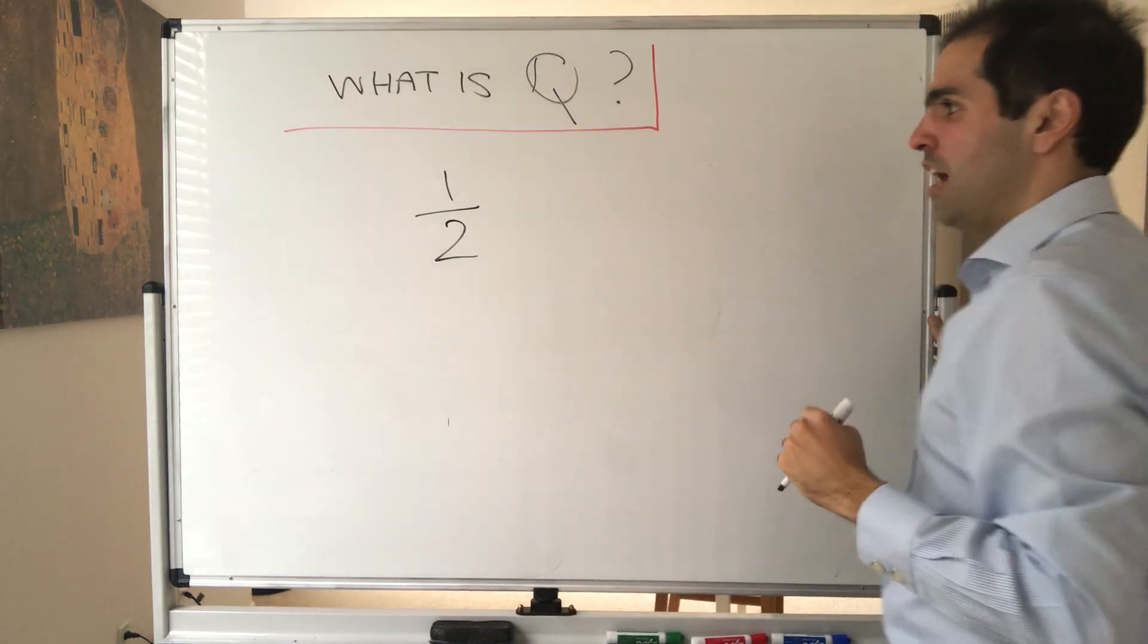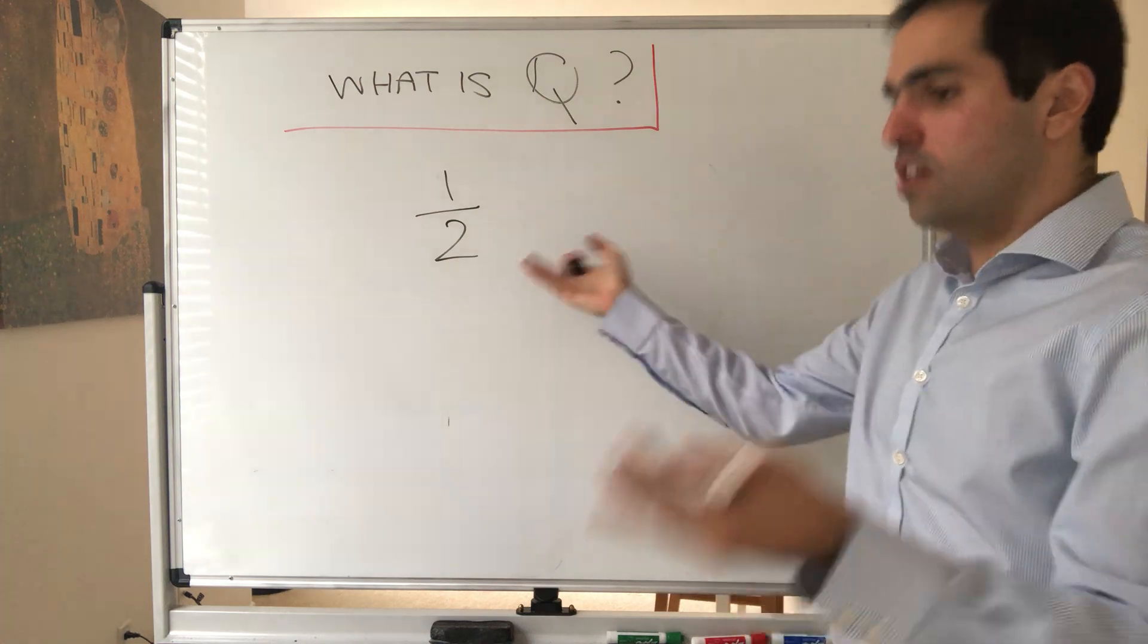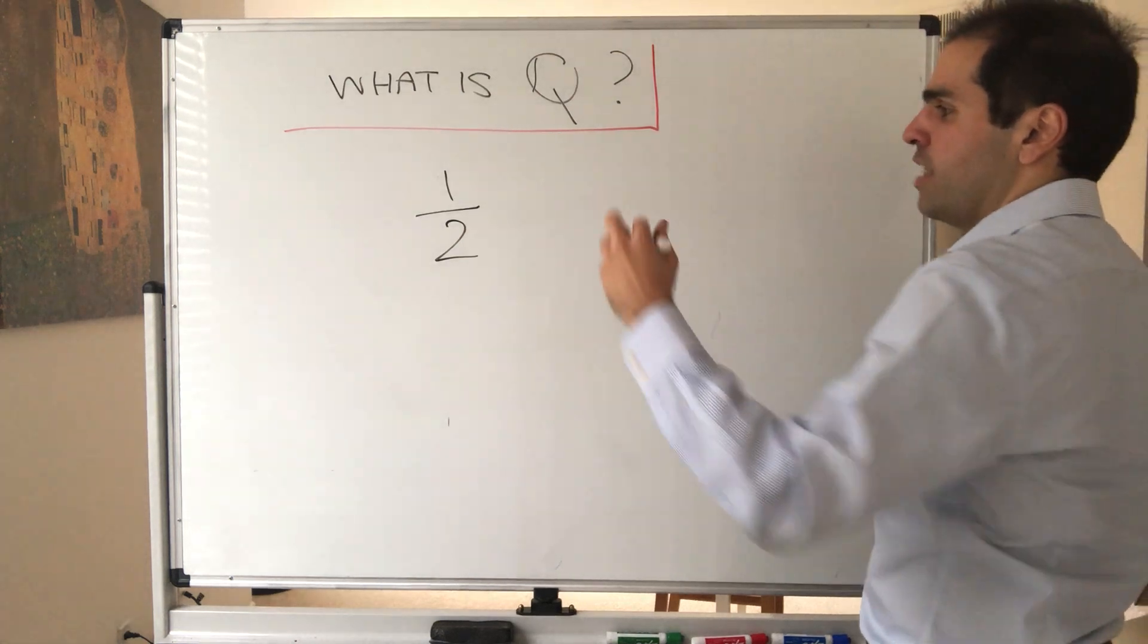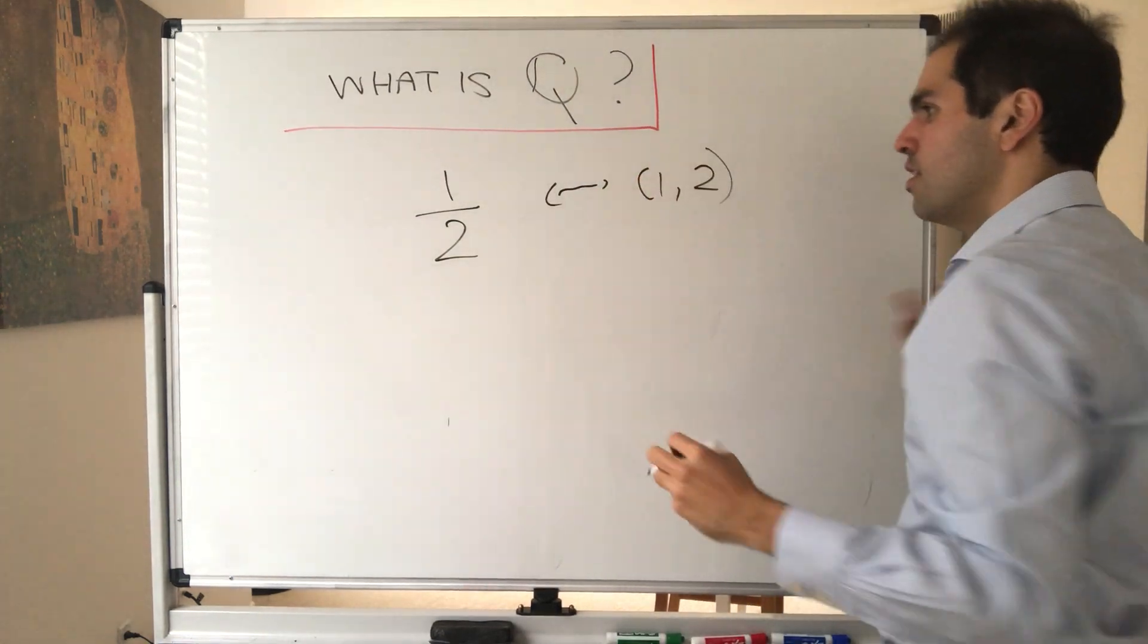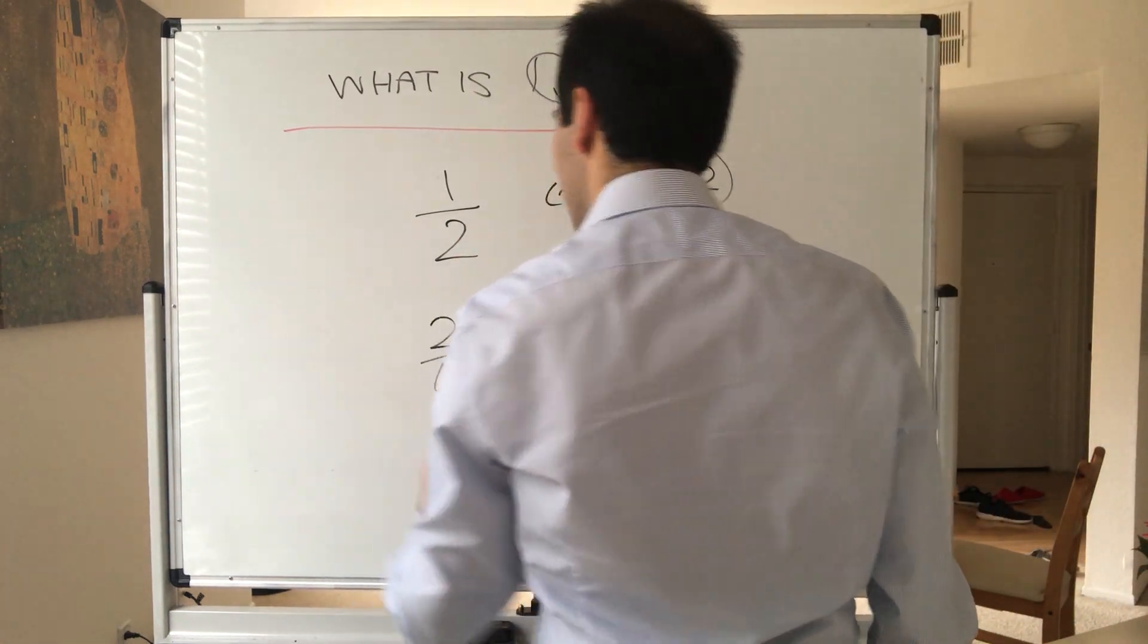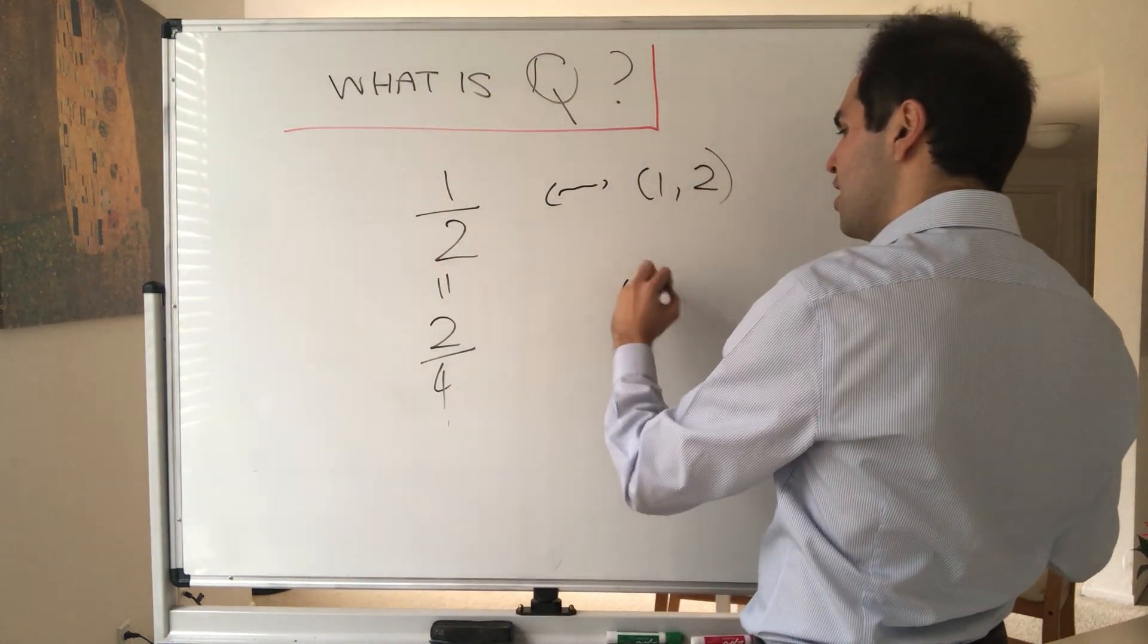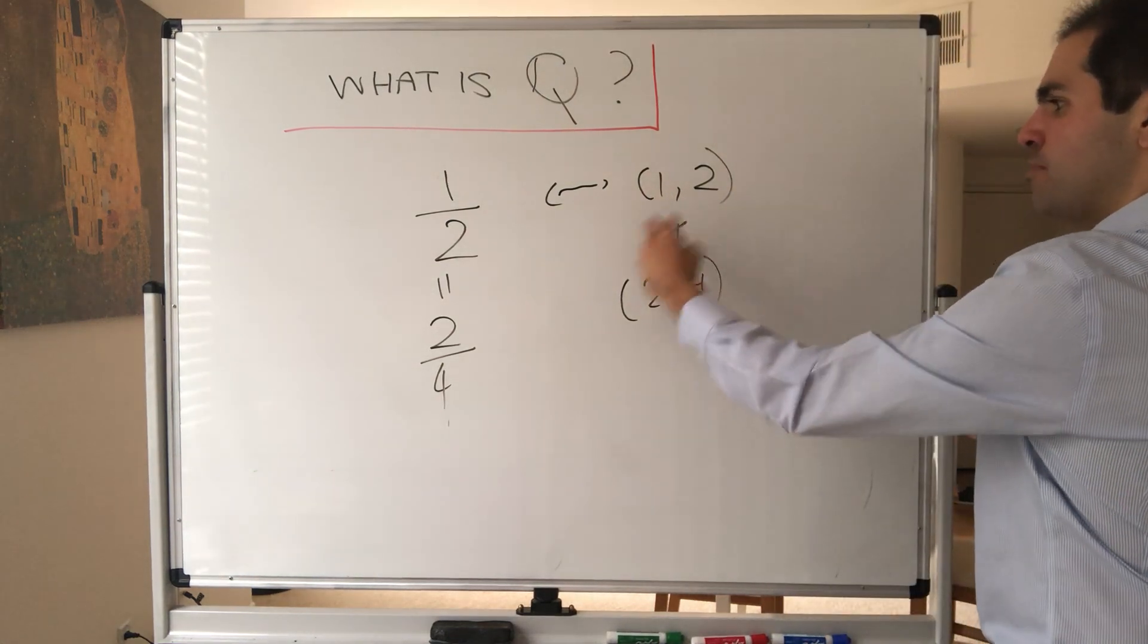Let's say one half. You would think, okay, well, if I give you two numbers, let's say 1 and 2, you can construct a fraction one half. So you might almost say that a fraction is just a pair of numbers. But that is not quite true because look at the fraction two fourths. It's the same as a fraction one half, but the pair (1, 2) is not the same as the pair (2, 4).